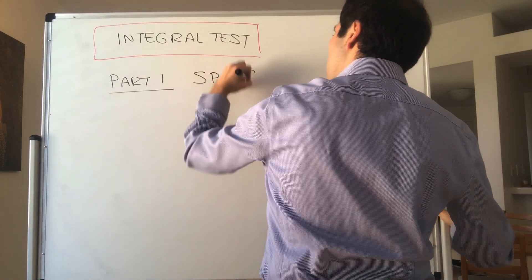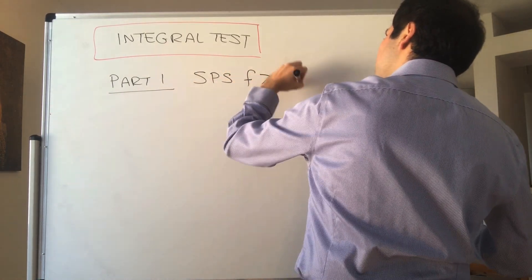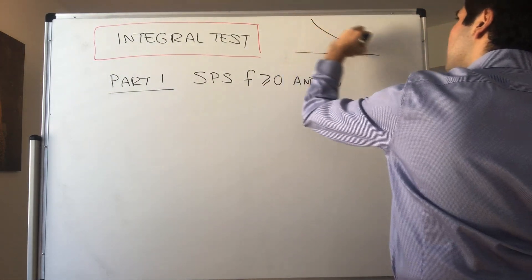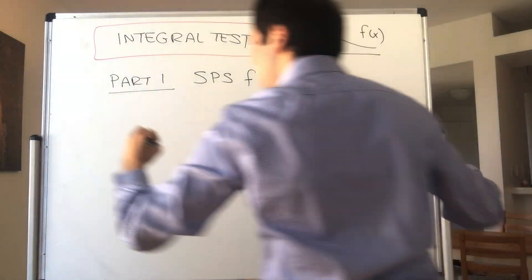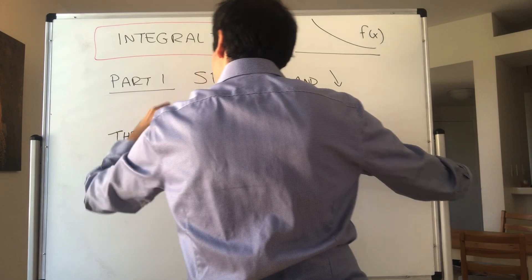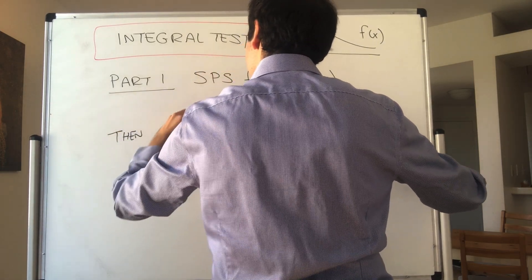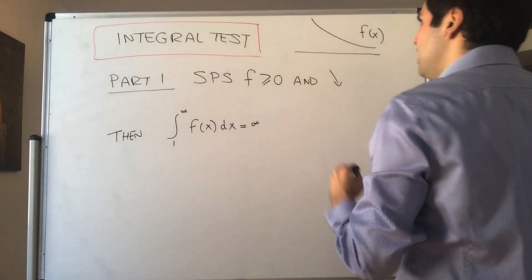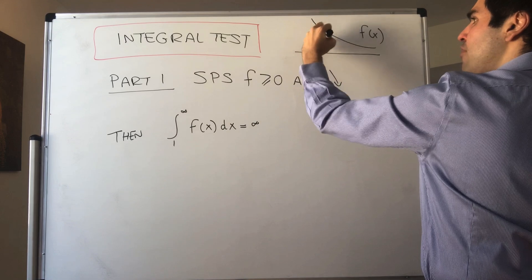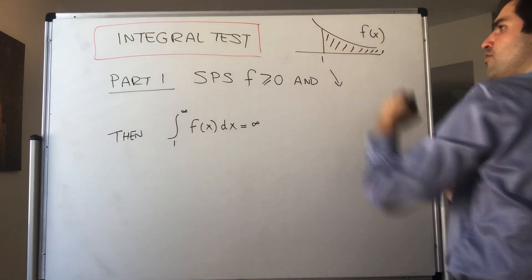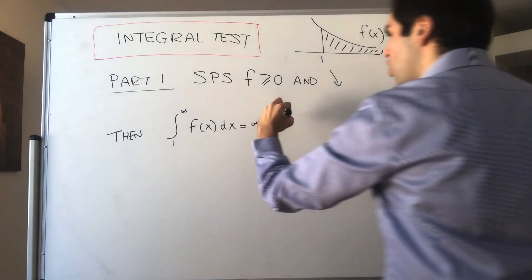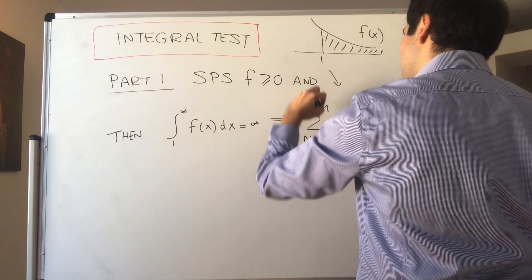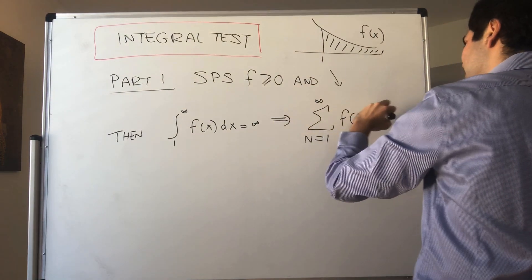Suppose f is a non-negative function and is decreasing — think for instance 1 over x, so that is f of x. Then if the integral from 1 to infinity of f of x is infinity, in other words if the area under f from 1 to infinity is infinite, then the corresponding series is infinite as well: the sum from 1 to infinity of f of n is infinite.